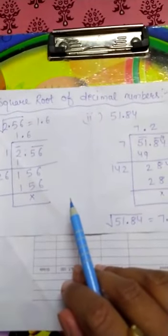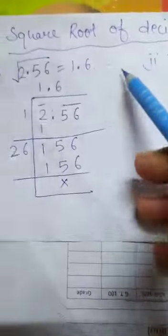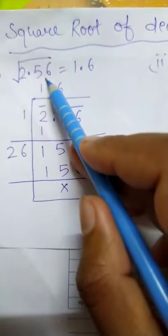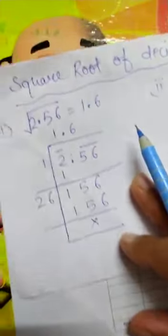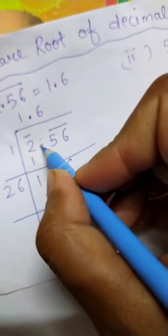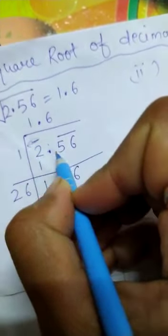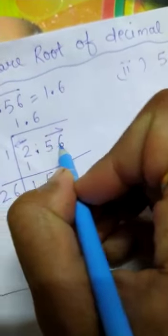Next topic: how to find the square root of decimal numbers using long division. For example, we have to find the square root of 2.56. The pairs are made similarly, but for decimals: to the left of the decimal point, pairs are made going right to left, and to the right of the decimal point, pairs are made going left to right.